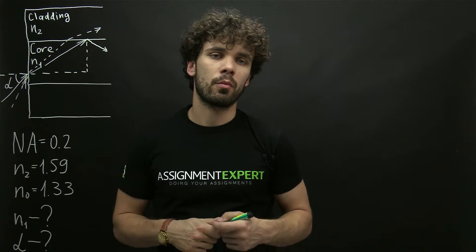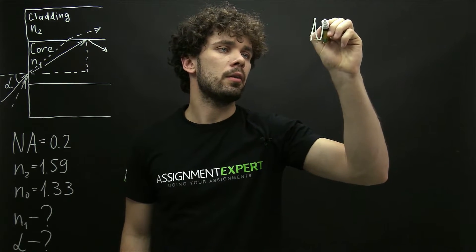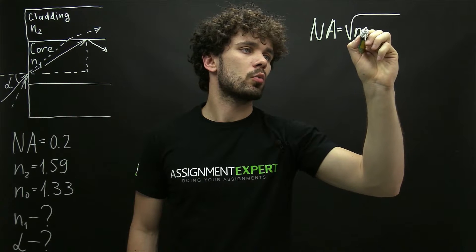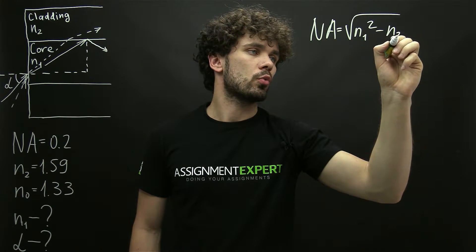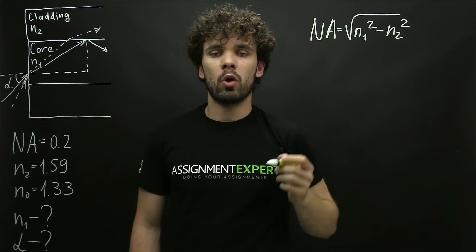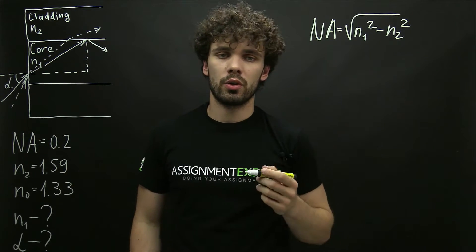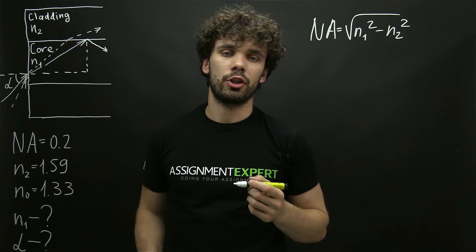We can find numerical aperture from the following formula. NA equals the square root of n1 squared minus n2 squared. Here n1 is the refractive index of the core material and n2 is the refractive index of the cladding material.